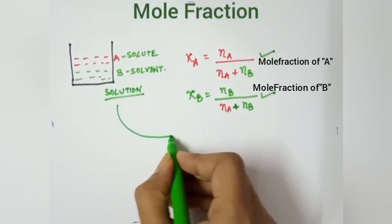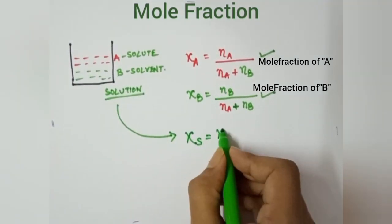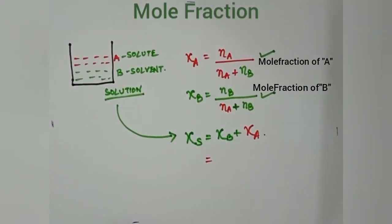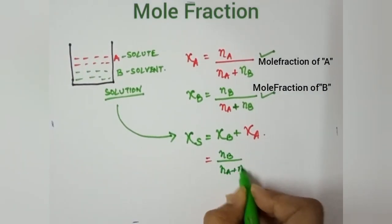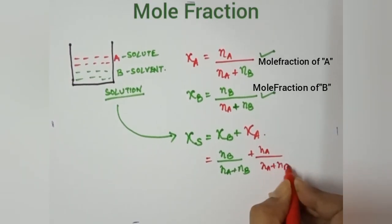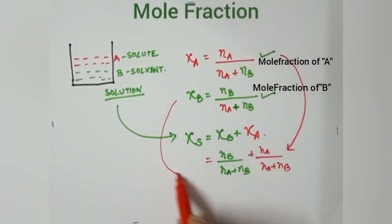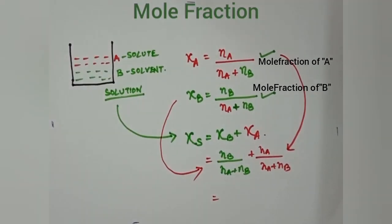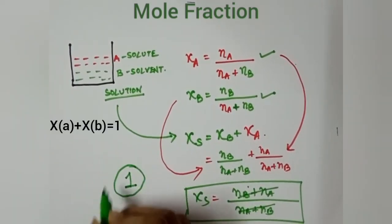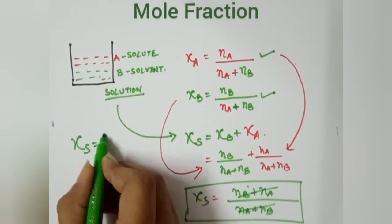If you want to find the total mole fraction, it will be the mole fraction of solution equals mole fraction of solute plus mole fraction of solvent. So XS = XA + XB. When we add these: nA/(nA + nB) plus nB/(nA + nB), the numerator becomes (nA + nB) and the denominator is (nA + nB). These cancel out, and the mole fraction of a solution always equals one. This is the main concept you have to remember.